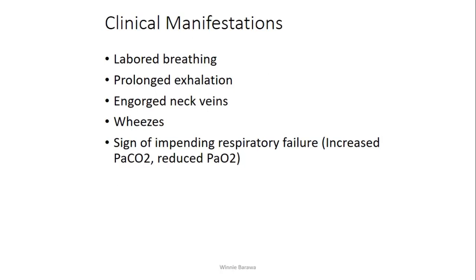Most patients end up using their accessory muscles to breathe. The lung sound you will hear when checking on this patient is wheezes. Some patients may also show signs of impending respiratory failure, indicated by increased carbon dioxide pressure. This is detected when a patient undergoes an arterial blood gas test, which shows the concentration of carbon dioxide and oxygen in the blood, as well as the blood pH — whether it is acidic or alkaline. Since this involves respiratory failure, you are more likely to see respiratory acidosis rather than alkalosis.